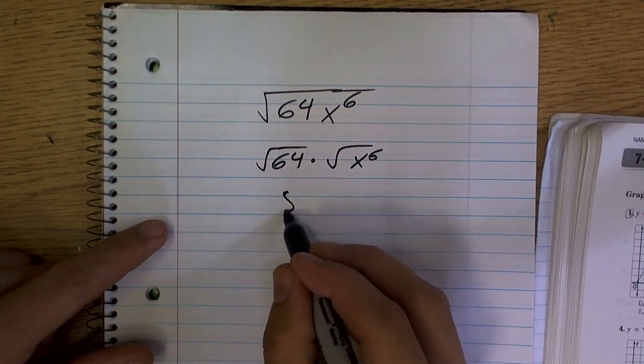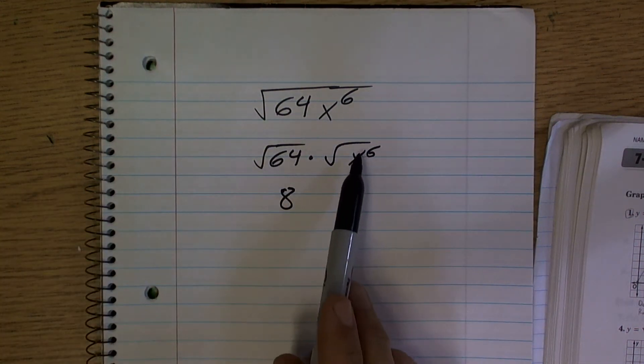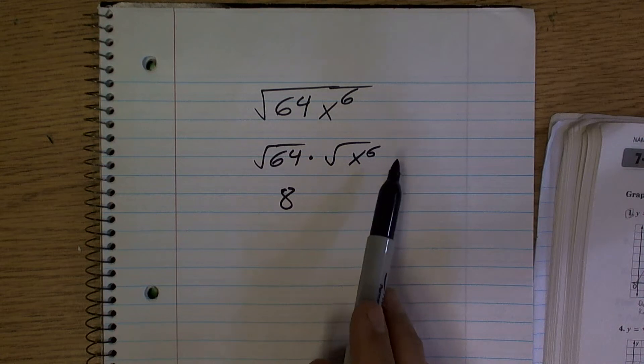The square root of 64, we know the answer is going to be 8, right? But the one thing we need to understand is, what is going to be the square root of x to the 6?